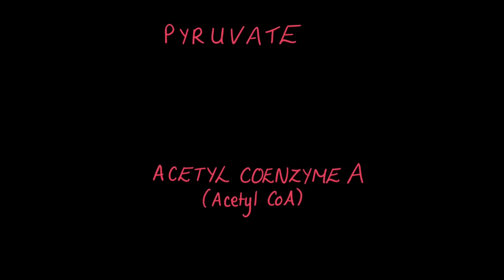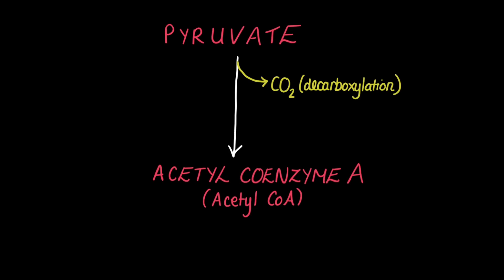The first reaction to occur there is called the link reaction. In this reaction, pyruvate is converted to acetyl coenzyme A, abbreviated as acetyl-CoA. During this process, pyruvate is first decarboxylated, which produces CO₂. It is then oxidised, causing the reduction of NAD⁺ — our electron carrier — to NADH. These reactions produce an acetyl compound, which is then attached to coenzyme A to produce acetyl coenzyme A.